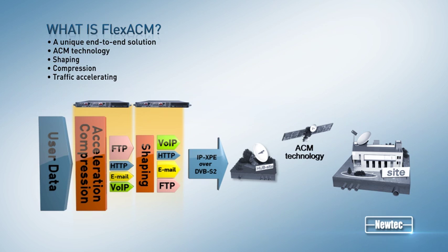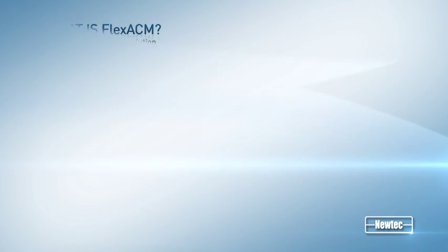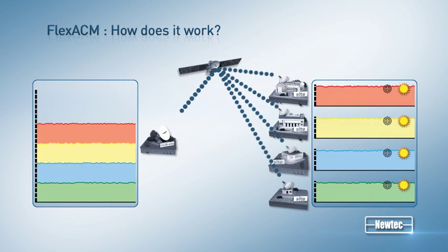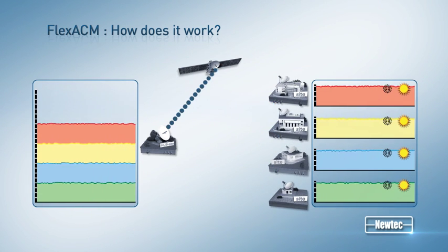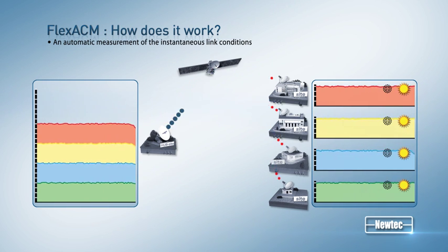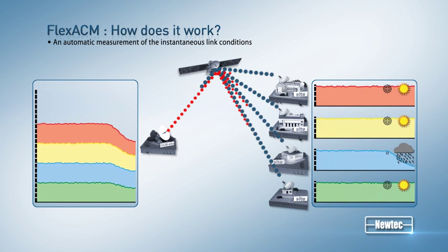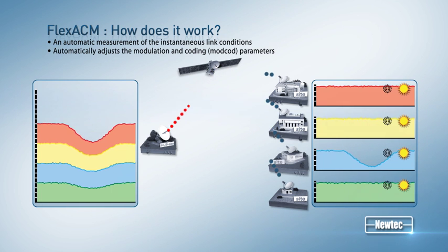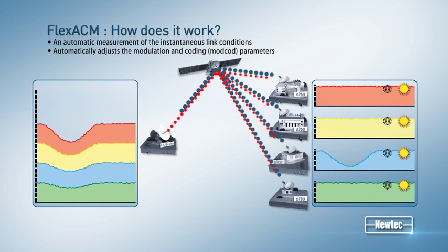You can implement FlexACM in existing satellite links without changing the rest of the transmission chain, such as the antenna and the HPA. The FlexACM solution combines DVB-S2 ACM technology with an automatic measurement of the instantaneous link conditions. Every few seconds, FlexACM checks these link conditions and automatically adjusts the MODCOD parameters when needed.